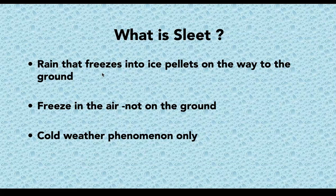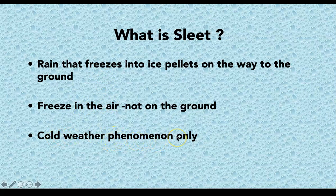Sleet is rain that freezes into ice on the way down. The important thing is that it freezes in the air. Sleet starts as rain — this is the kind of slushy stuff that you get. You see this during cold weather. Sleet versus hail and sleet versus freezing rain — these are three things people tend to mix up. Sleet is cold weather; hail, as you'll see, is warm weather. Sleet is rain that freezes on the way down. Freezing rain is rain the whole way, but it freezes when it hits the actual ground. Freezing rain is what you slip and fall on; sleet just makes a slushy mess everywhere.